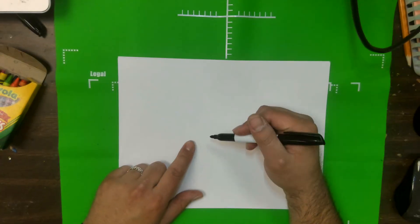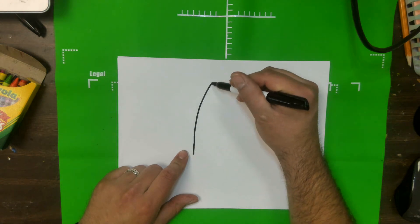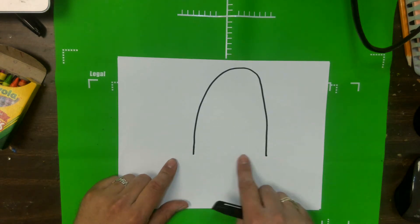So I try to find the middle of the paper right here and then what I'm going to do is just go up. And then come down like that and have them be kind of parallel with each other.